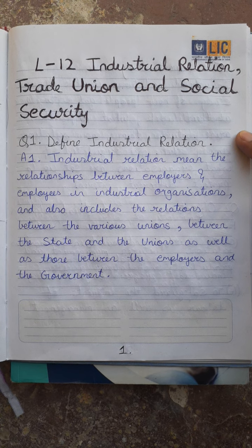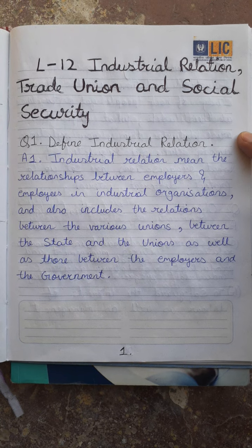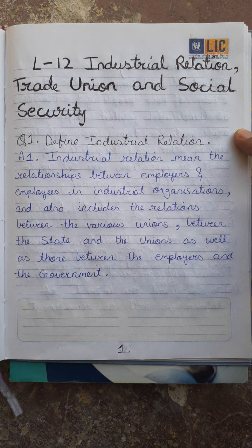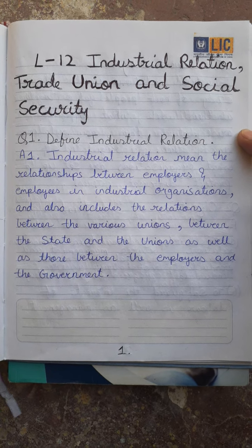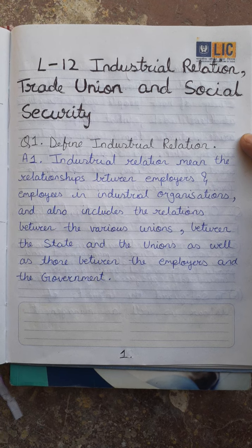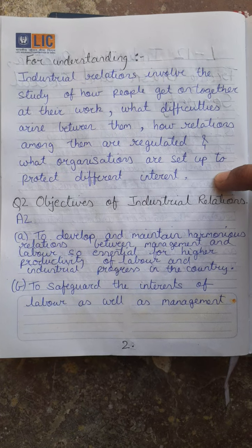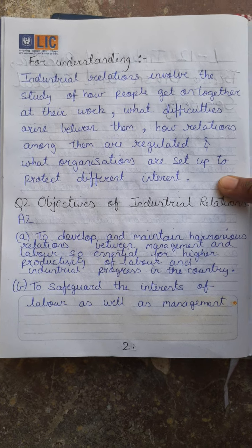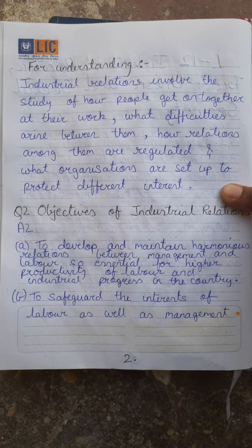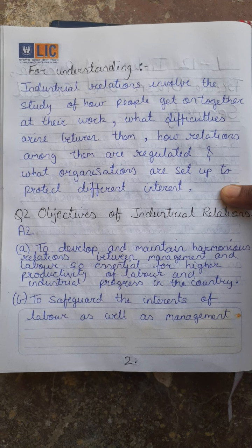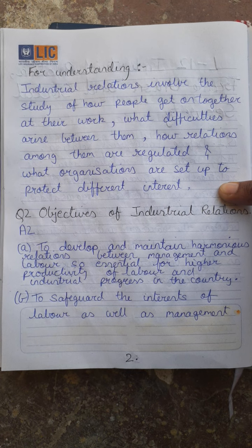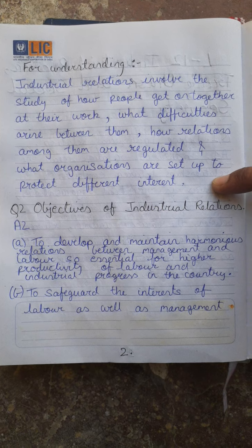Industrial relation means the relationship between employers and employees in an industrial organization. It also includes the relationship between the various unions, between the state and the union, as well as between the employer and the government. In simple language, industrial relation involves the study of how people get on together at their work, what difficulties arise between them, how relations among them are regulated, and what organizations are set up to protect different interests.